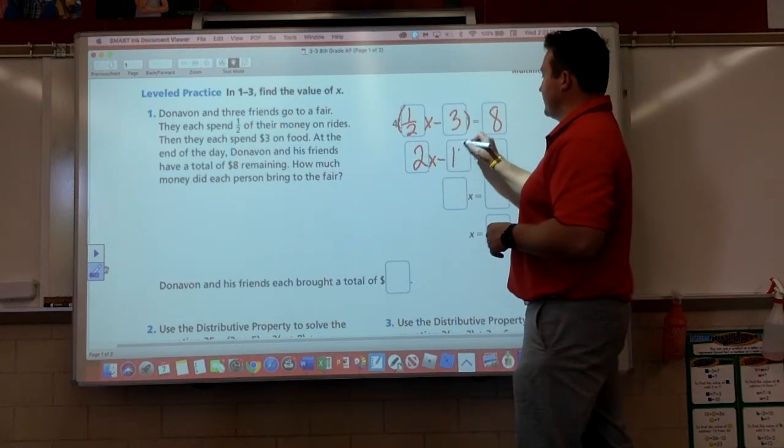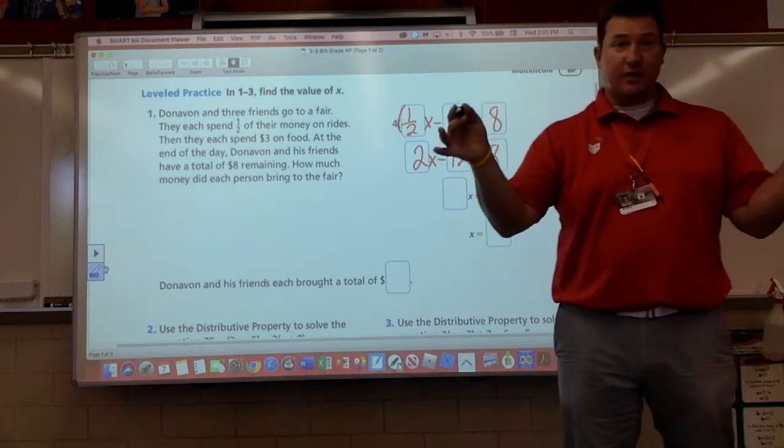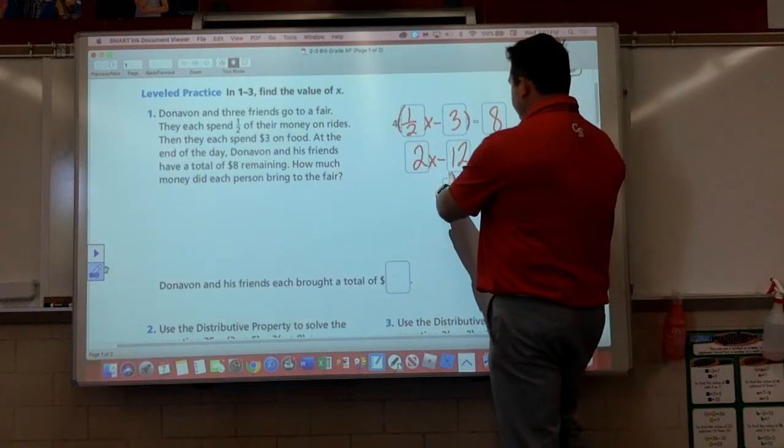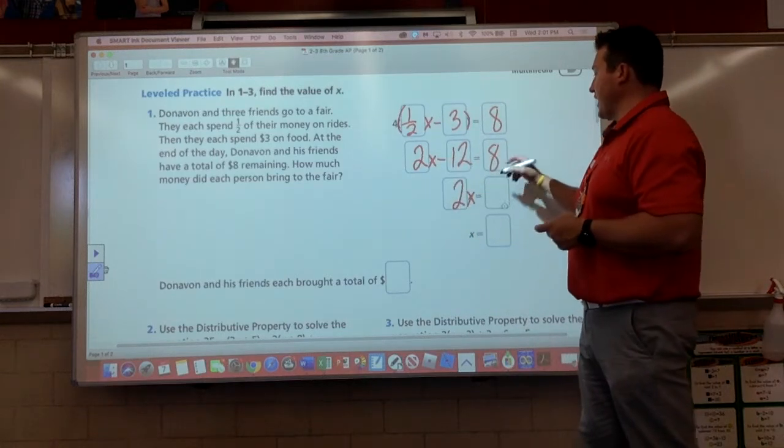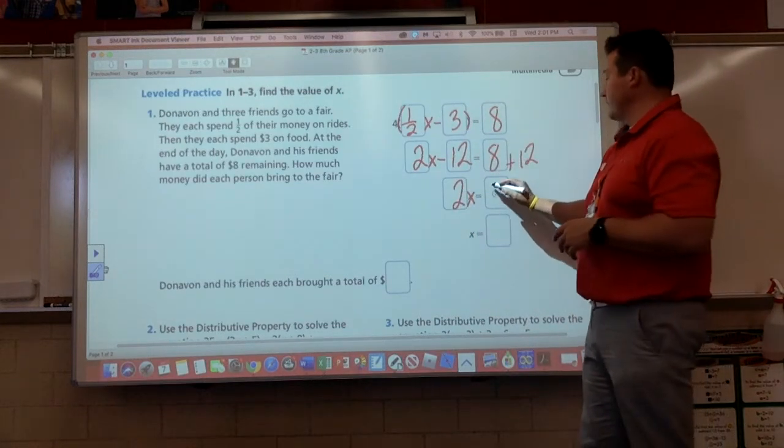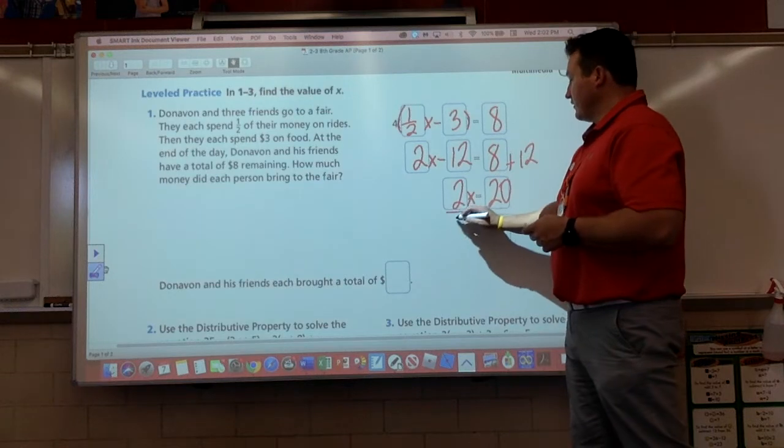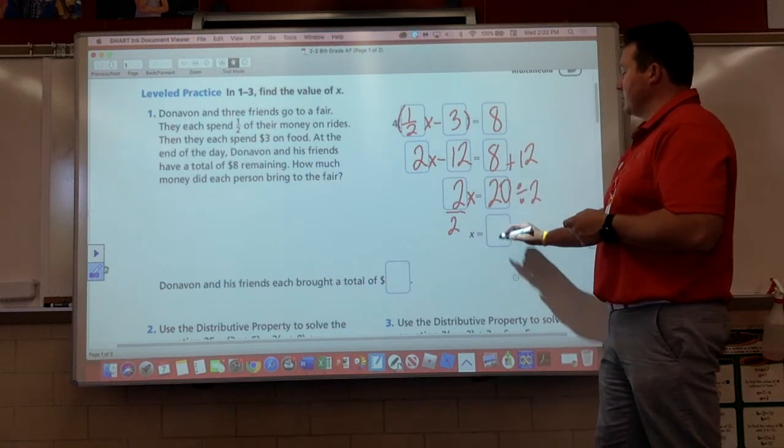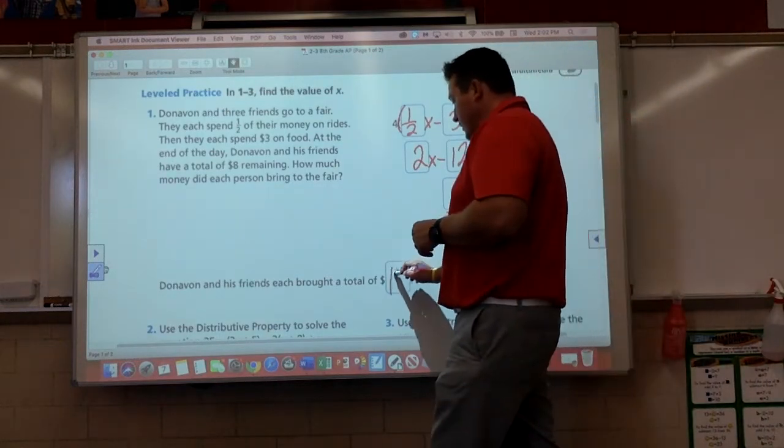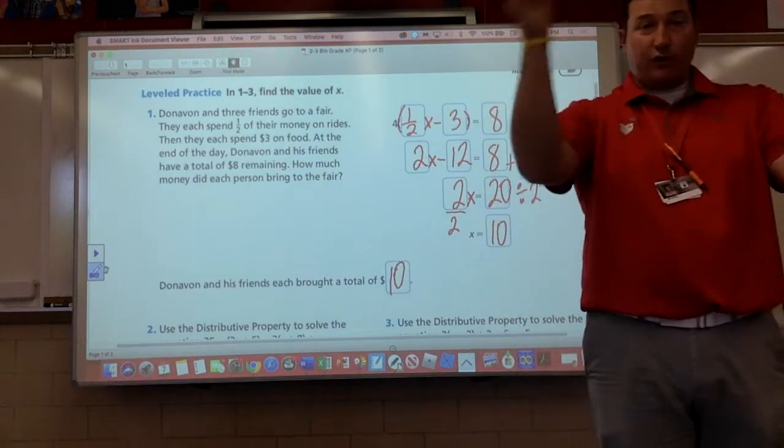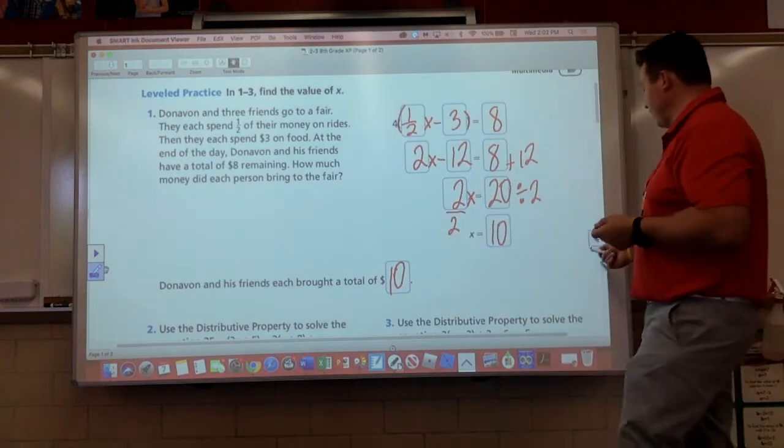They spent half of their money on rides. So we are going to say one half X. What else did they spend their money on? $3 on food. Notice we have a subtraction sign here. Minus three. That's because we're losing our money. We're spending it on something. How much money did we all have left? We all had $8 left. We're good to go from here. First step, distribute the four into both of these terms. Watch how quickly I can do this. Four times a half is 2X. Four times that, 12, bam. Nice.